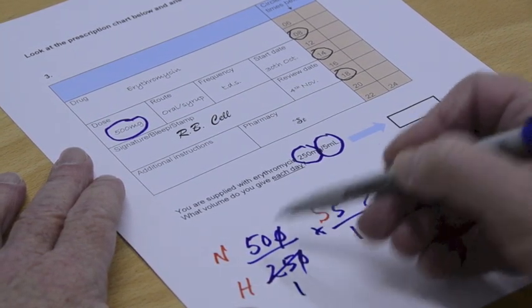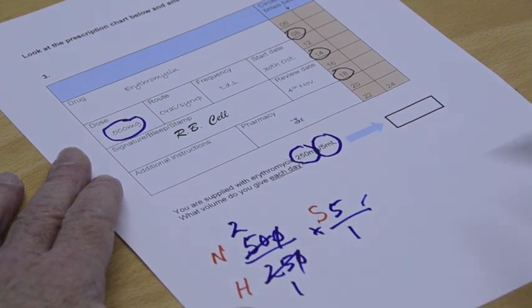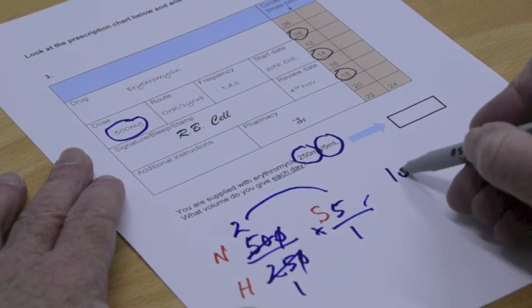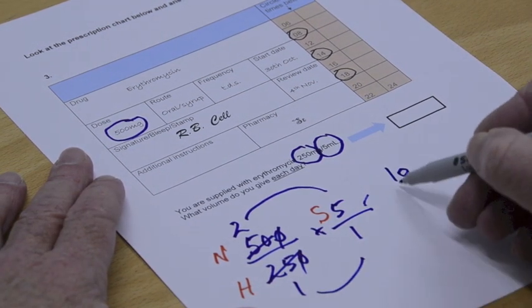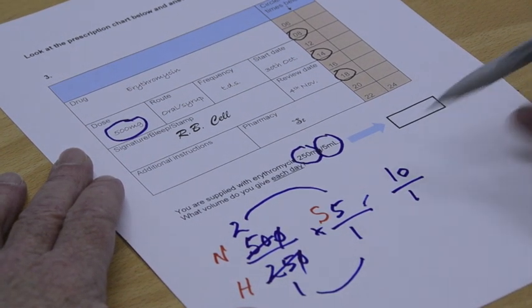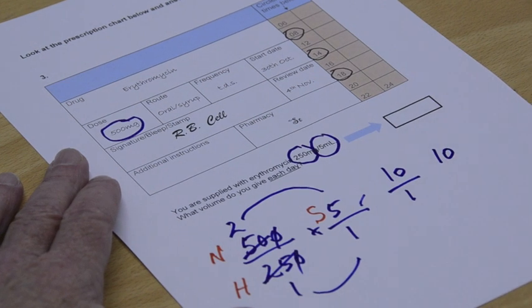How many 25s are there? 2. Don't forget to multiply the top of the fraction which gives us 10. Multiply the bottom which gives us 1 and 1 into 10 is 10. That's very satisfactory so far isn't it?